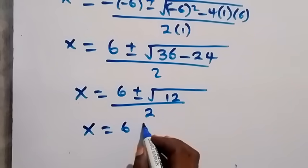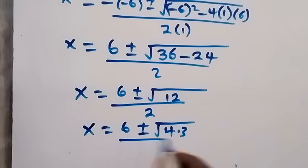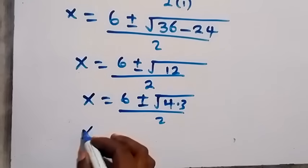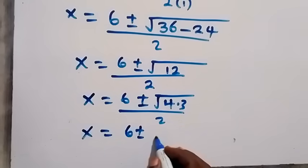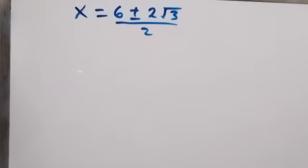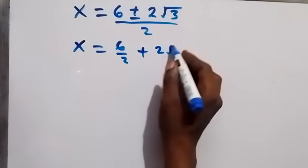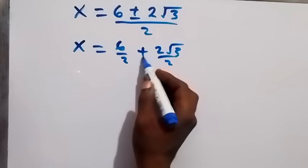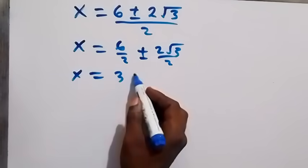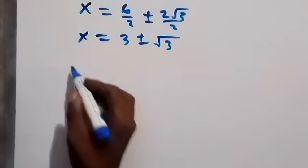We can separate 12 as 4 times 3, so x equals six plus or minus the square root of 4 times 3, over two. The square root of 4 is 2, so we have x equals six plus or minus 2 root 3, over two. Separating the fraction gives x equals six over two plus or minus two root three over two, which simplifies to x equals three plus or minus root three.